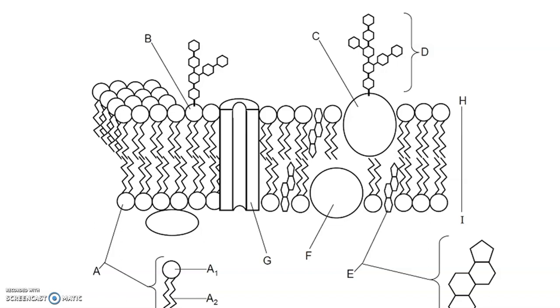C is called a glycoprotein. It's a protein with a carbohydrate chain. Again, it has many functions such as cell to cell recognition. D is part of a carbohydrate that's attached to the protein.